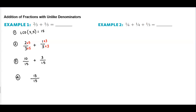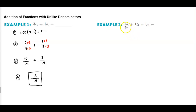At this point we need to ask ourselves: can we simplify this any further? We cannot. So therefore the answer is thirteen over fifteen. The next example is we want to be able to add the fractions one-sixth plus one-fourth plus one-third.